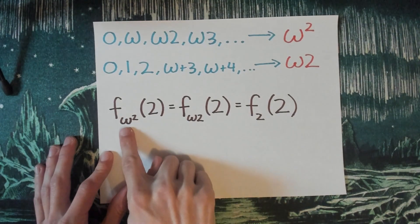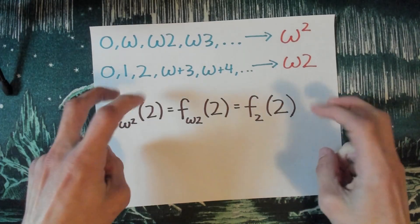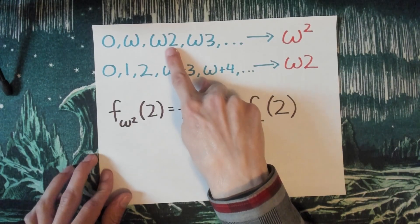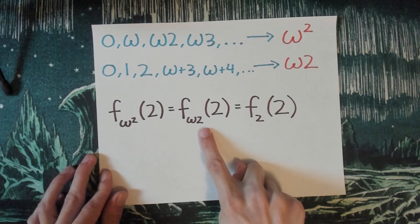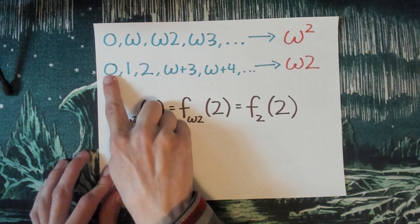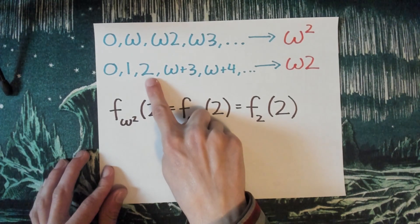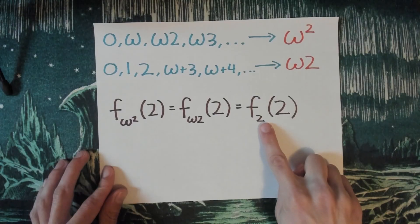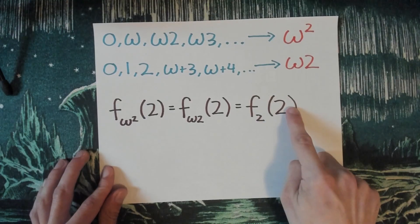Now f omega squared of 2, omega squared is a limit ordinal, so we plug in the 2 into the omega squared plug-in. So omega squared of 0, omega squared of 1, omega squared of 2. Okay, so omega squared gets replaced with omega times 2. Now omega times 2 is also a limit ordinal, so I'm going to plug in the 2 into there. So omega 2 of 0, omega 2 of 1, omega 2 of 2 is 2. So omega times 2 is going to get replaced with the 2. And now I have f2 of 2, so f omega squared of 2 is just equal to f2 of 2. Interesting.